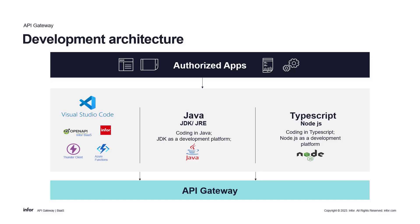InfoBus integrates with popular tools for efficient development. You can use Visual Studio Code for editing, where InfoBus is provided as an extension for API development. You can also choose to use either Java or TypeScript as your programming language, utilize GDK or Node.js as a development platform, and build and deploy locally with Maven or NPM. Additional VS Code extensions like OpenAPI, Thunder Client, and Azure further enhance your development experience.